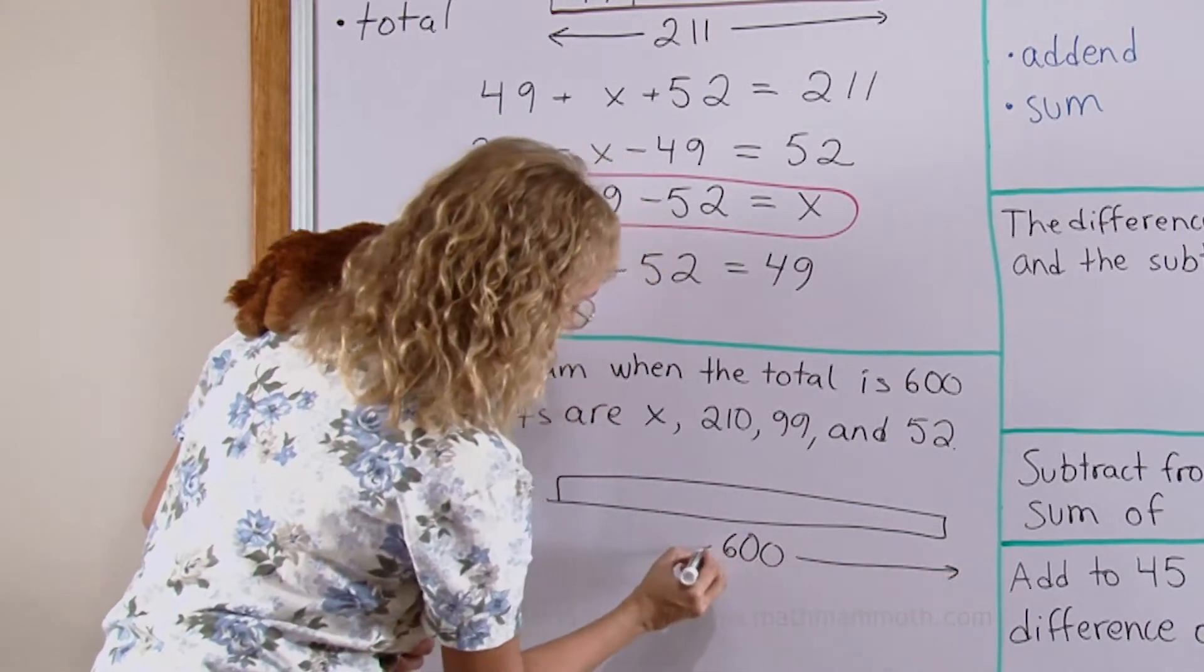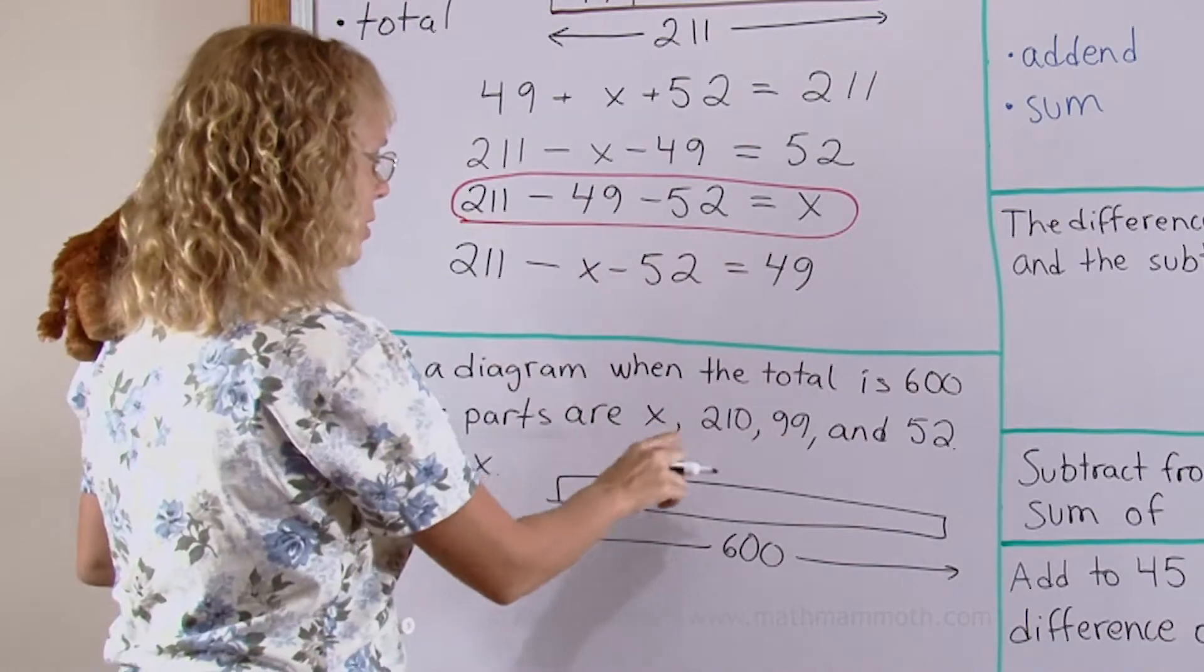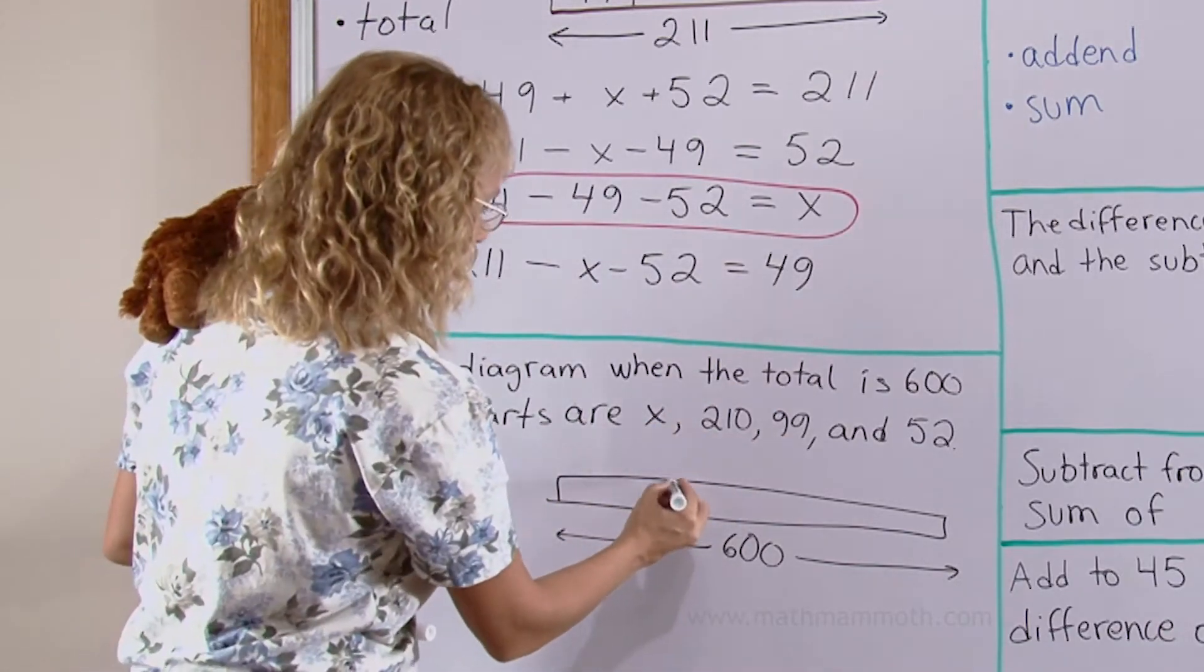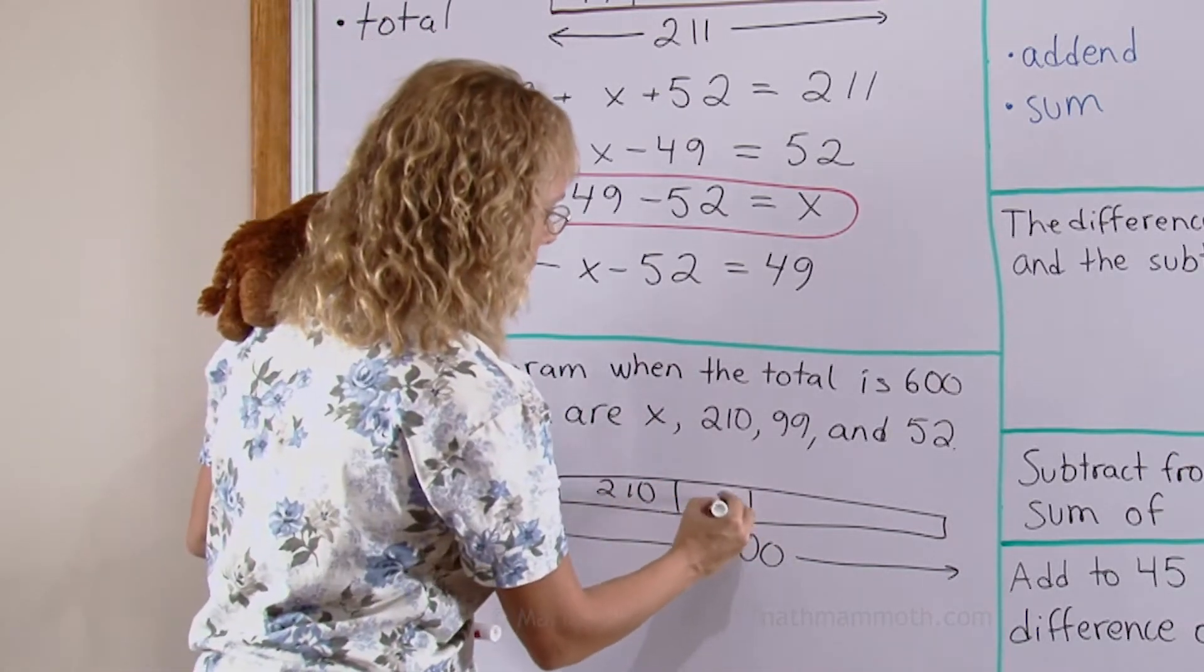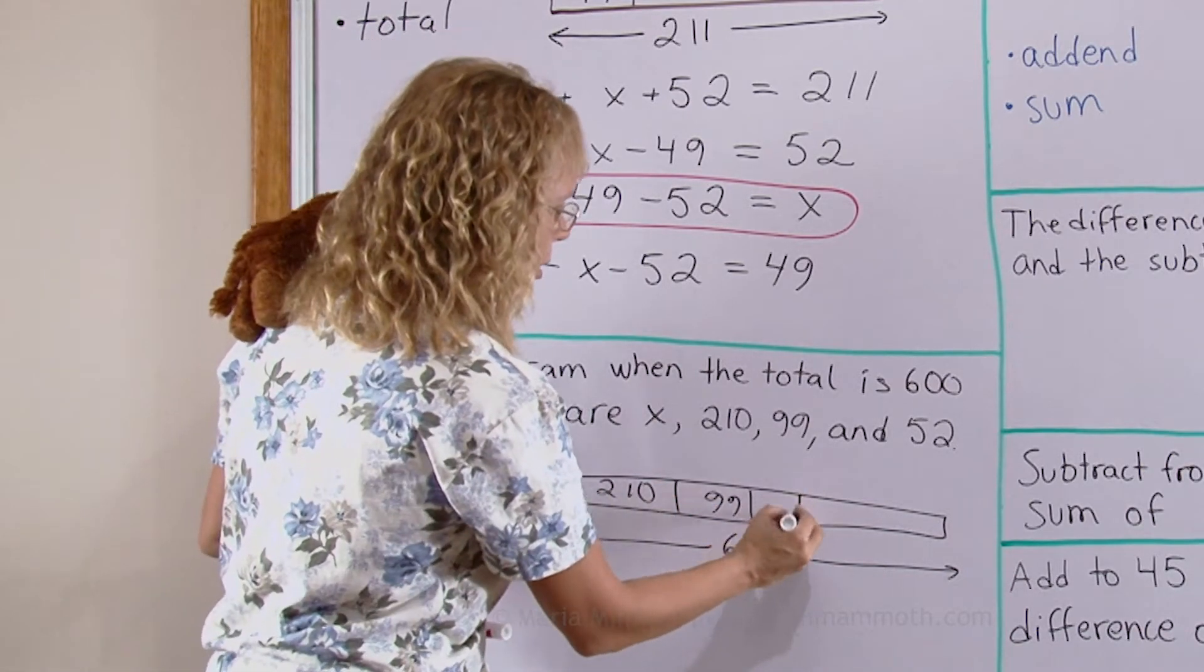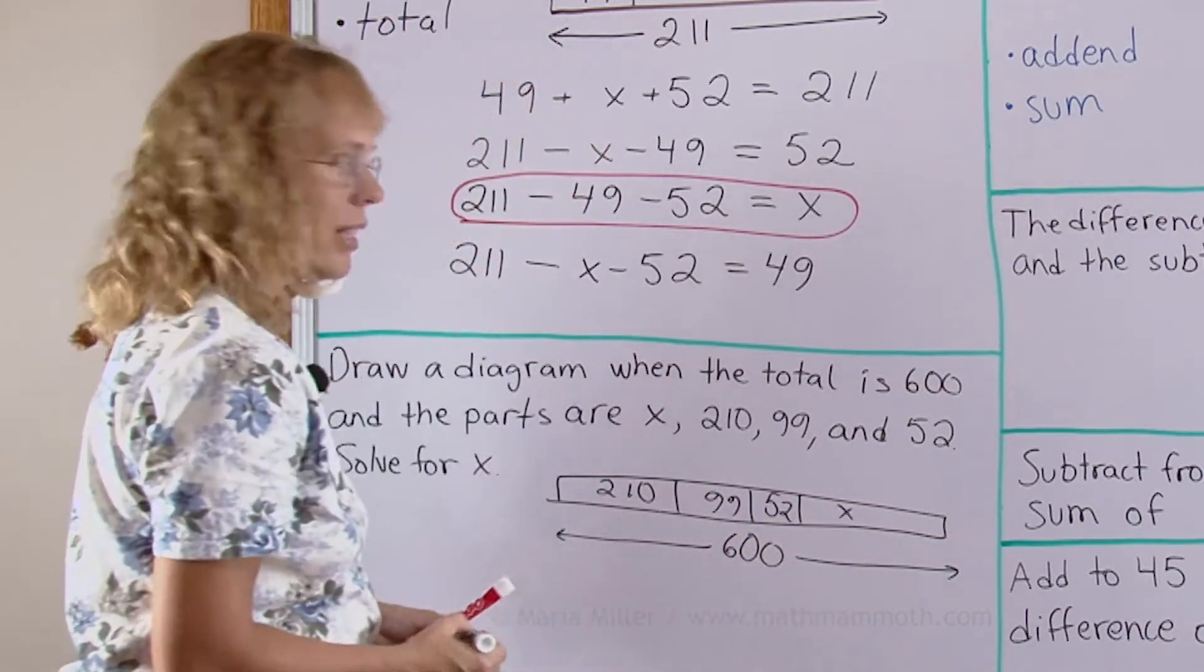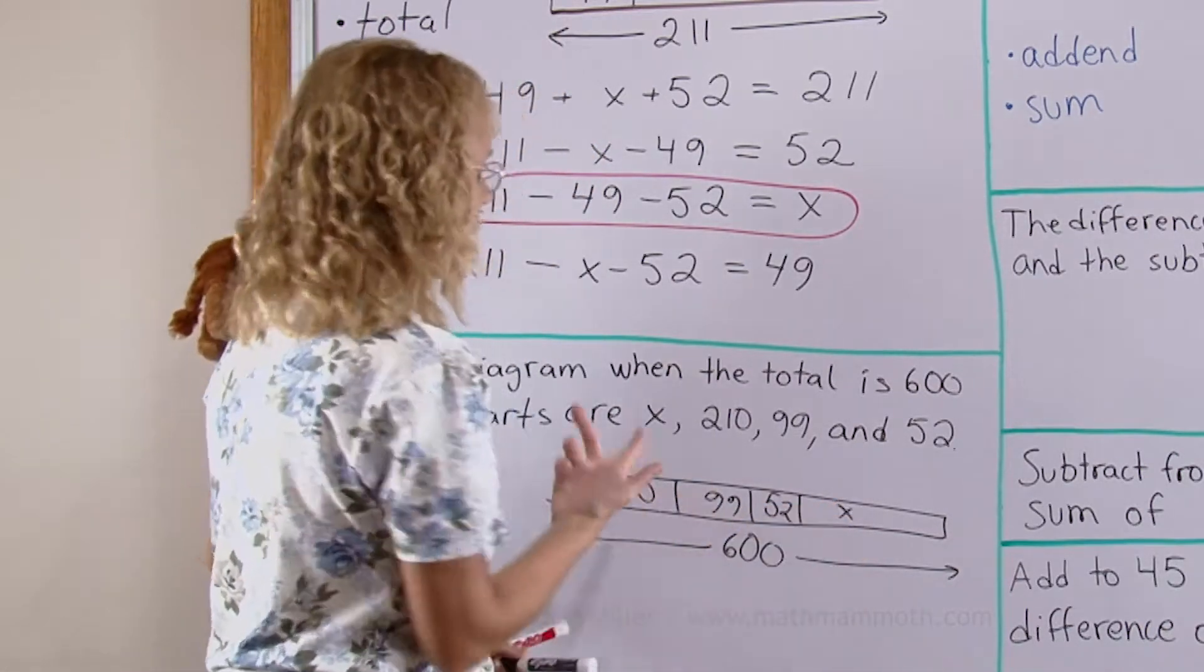210 is one of the parts so that's about a third of it. 99 is one of the parts, 52 would be a little one and then x. It doesn't matter in which order you put these parts here either.